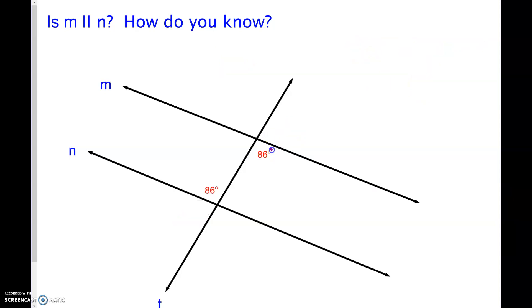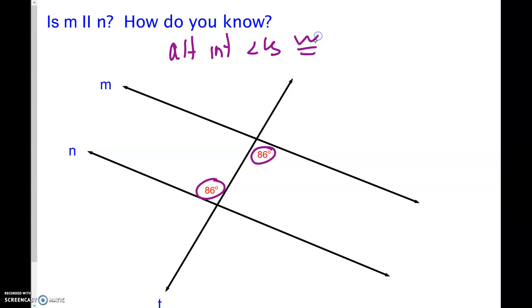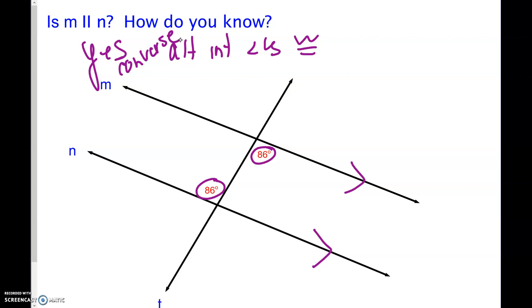We have an 86 and an 86 — so we have alternate interior angles that are congruent. If those angles are congruent, can we conclude that this line is parallel to this one? Yes — by the converse of alternate interior angles. Because those alternate interior angles are congruent, the theorem we would use is the converse of alternate interior angles.